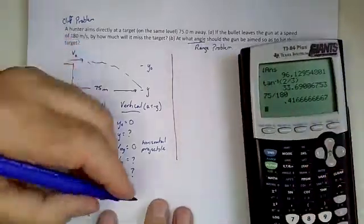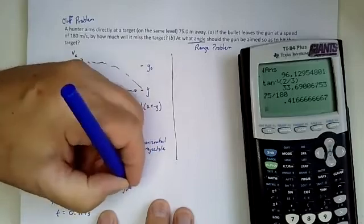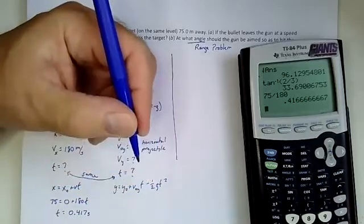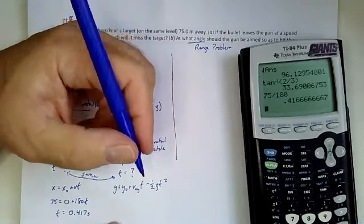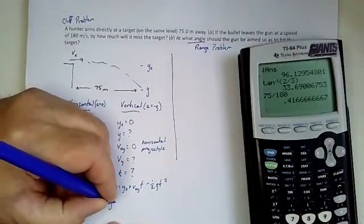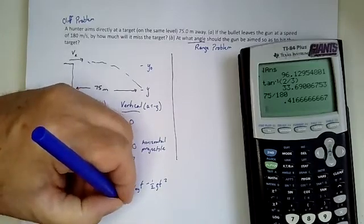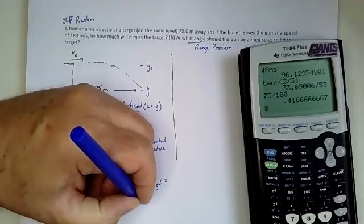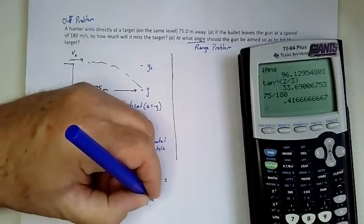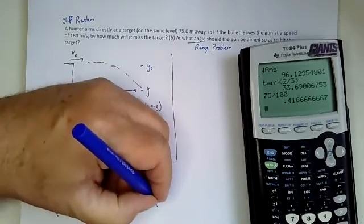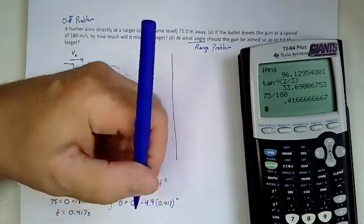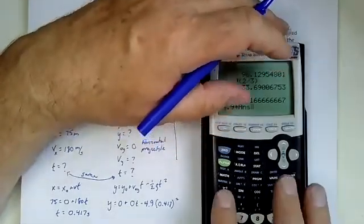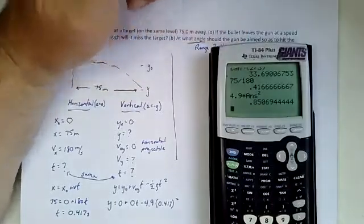Now the y motion would look like this. y is equal to y zero plus v zero y t minus one half g t squared. And now I know the time, because that's what links the two together. So I don't know what the final height is. But I know the initial height is zero plus zero times time, which is still zero. And then minus one half g. So let's just call it minus 4.9 t squared. And that's 0.417 squared. So 4.9 times my answer squared. 0.85 meters.